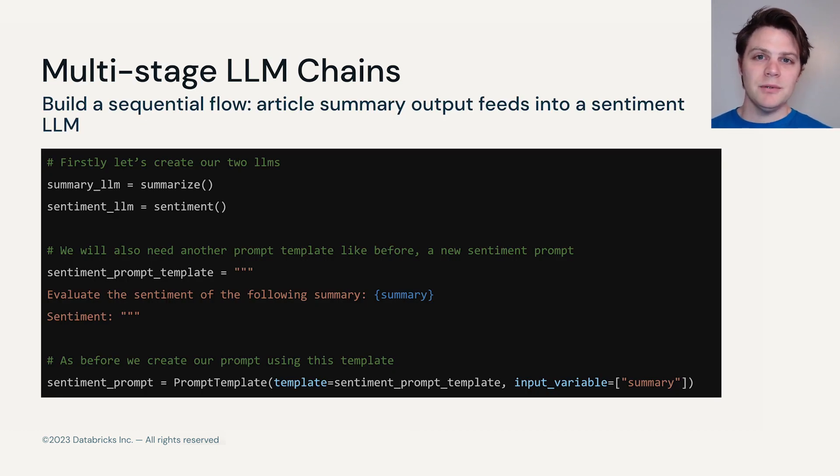Let's go back to our example, where we've finished taking in articles, summarizing them and creating a prompt template to do that summary. We now need to create another prompt template so that we can take our sentiment analysis and put that into our workflow. We're going to create a new sentiment prompt template like we did for the summarization, and we're going to say evaluate the sentiment of the following summary, and then pass in that summary.